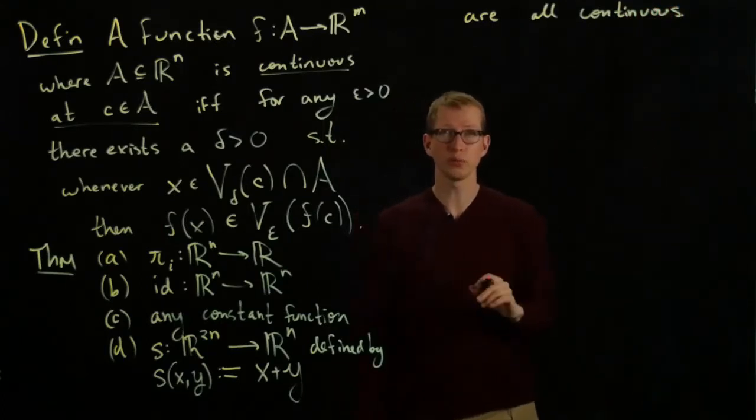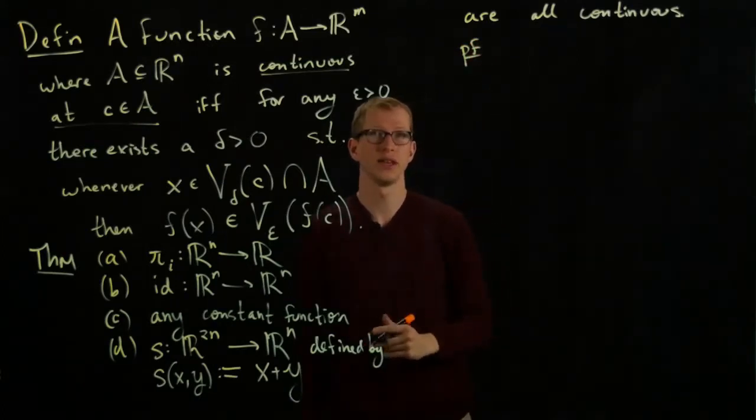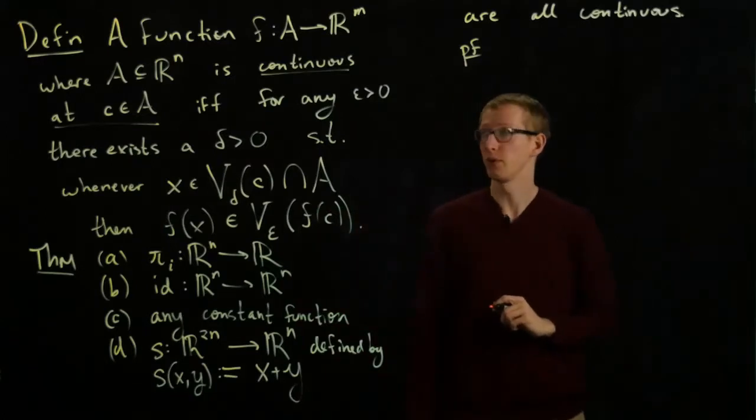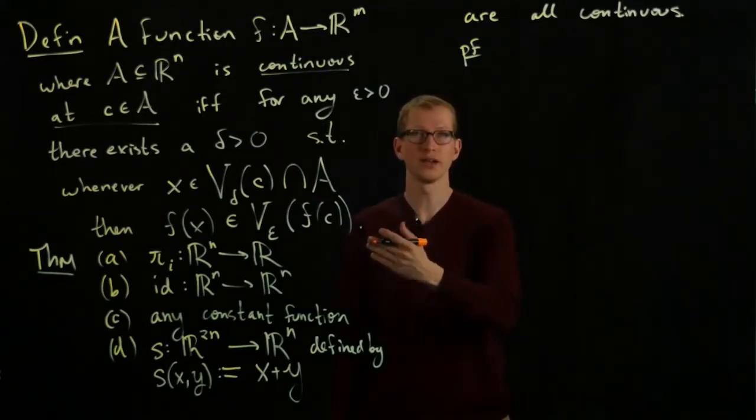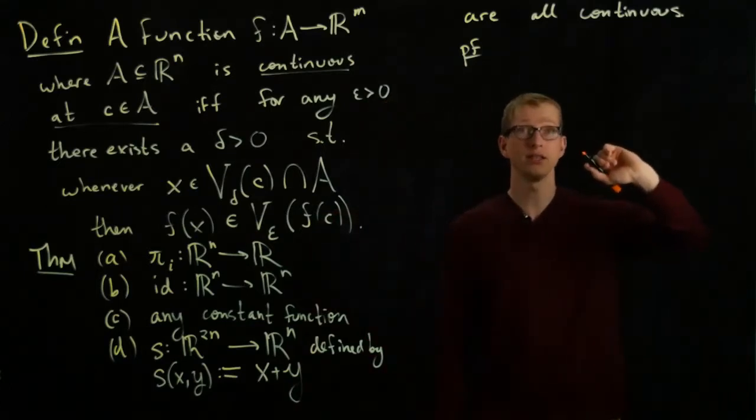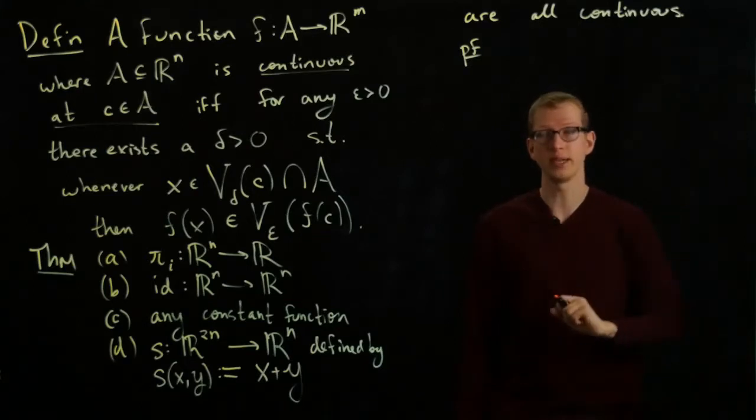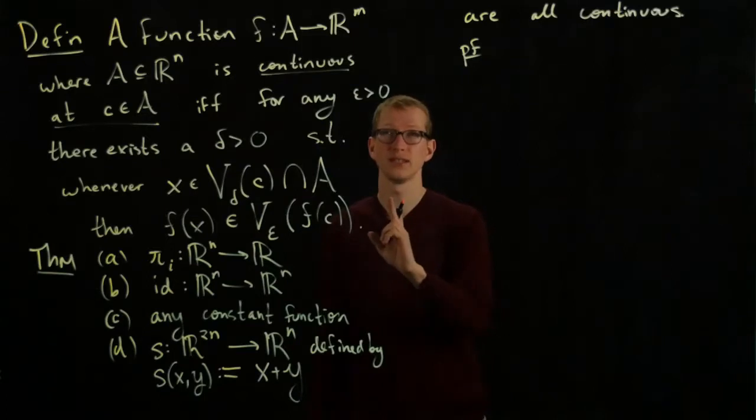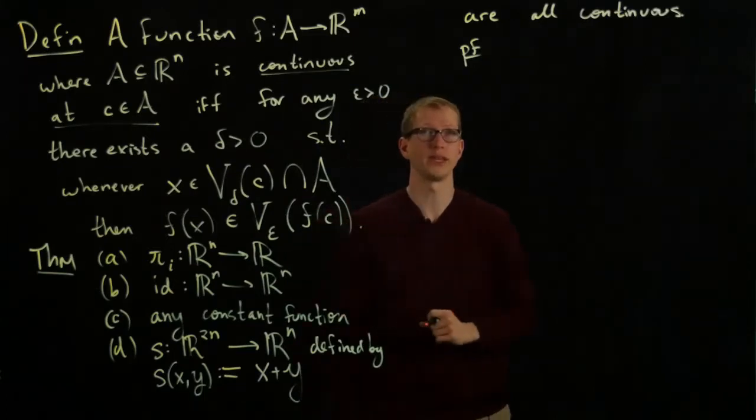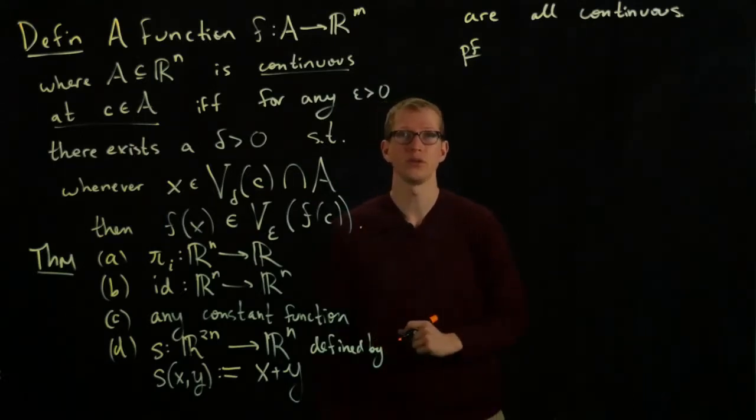So all of these different examples of functions are examples of continuous functions, and we'll actually prove this. The proof of the first three examples is quite easy. I would say that in every single case... and so remember what this definition requires. A function is continuous on its entire domain if it's continuous at C for every C in its domain. So these functions are continuous on the entire domain on which they are defined.